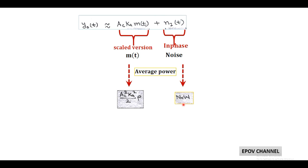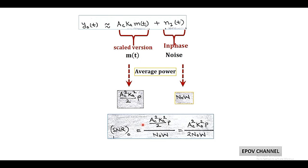Here N₀ is the average noise power per unit bandwidth. Taking the ratio of average signal power to average noise power, we get AC²·KA²·P / (2·N₀·W), which is the output or post-detection SNR.